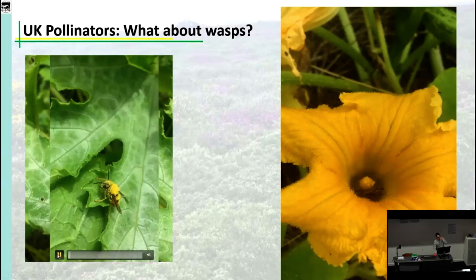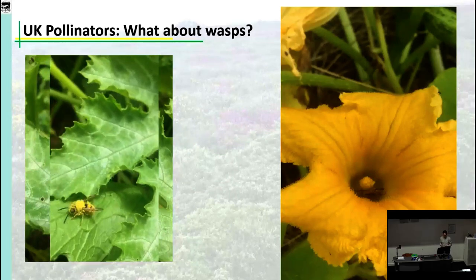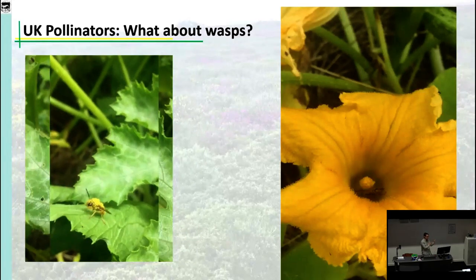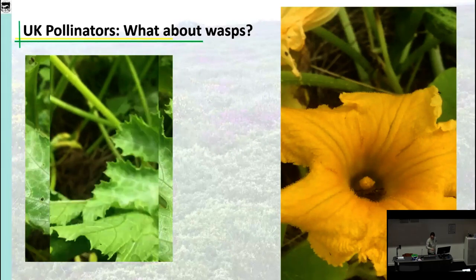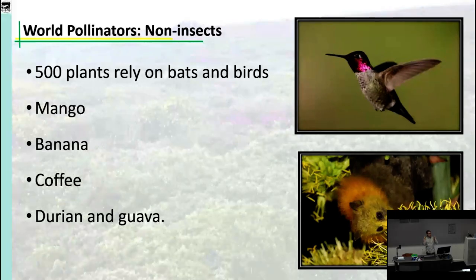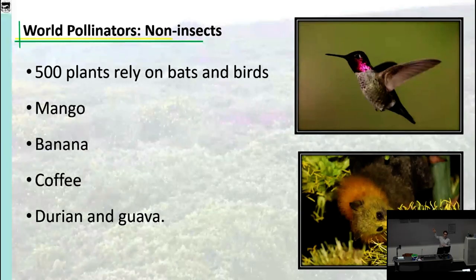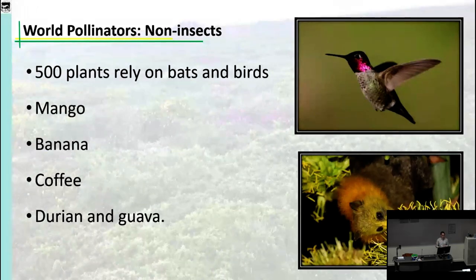This is one of the cutest videos I've ever shot of an insect — look at it, it's covered in pollen, just trying to get it off its face. Worldwide, we also have many species of birds and bats that do pollination. The big, cool, expensive tropical fruits — mangos, bananas, coffee, durian, and guava — are all bat- or hummingbird-pollinated. When talking about pollinator conservation in the tropics, we have to think about these species. You don't get bumblebees in the tropics, but you do get hummingbirds, and they are just as sensitive to environmental disturbance and just as important as pollinators.